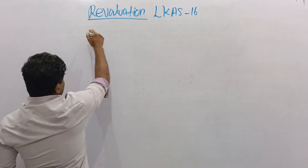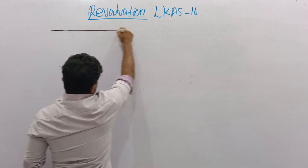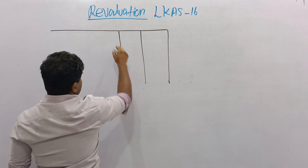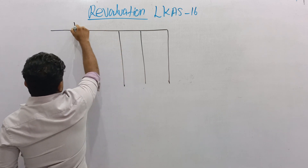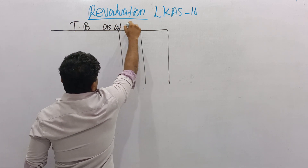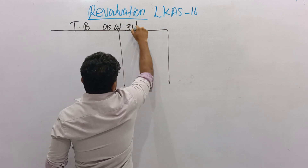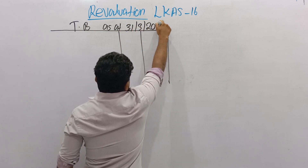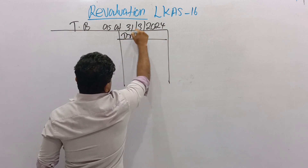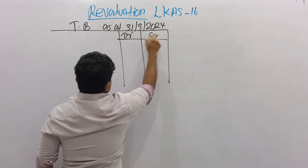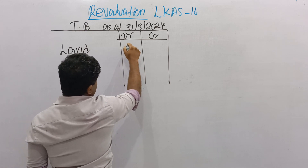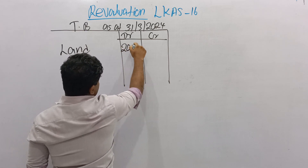Think about Land. Consider this example. This is a Trial Balance as at 31 March 2024. On the debit side, Land is available in the Trial Balance on the debit side — that is an asset. The value equals 20,000.